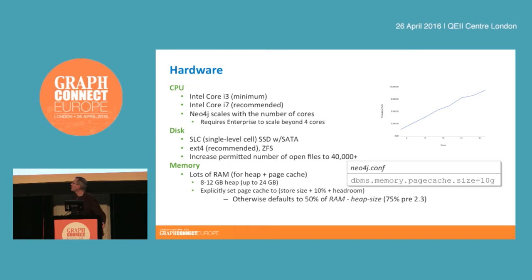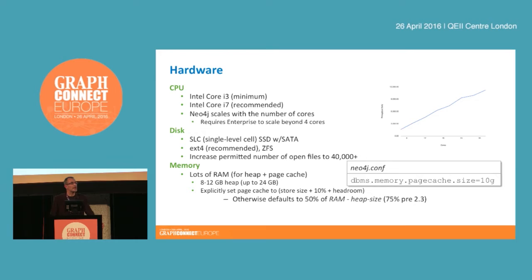One thing we recommend when configuring your servers is to increase the number of permitted open files on your instances. If you're running on some flavor of UNIX, by default the number of open file handles is very low — about 1024. We recommend upping that using the ulimit config to 40,000 or more. The reason is Lucene: we use Lucene as an index provider, and when indexing data it produces lots of very small intermediary files which it then begins to aggregate, meaning you can quickly end up with many open file handles on a machine.